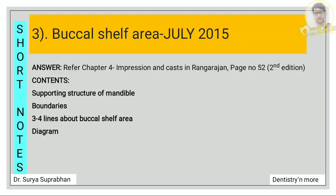Next question is buccal shelf area. Refer chapter 4, impressions and cast, page number 52. Write that the buccal shelf area is a supporting structure of the mandible, then write about the boundaries of the buccal shelf area, three to four lines about it, and a diagram is a must.